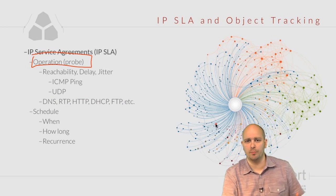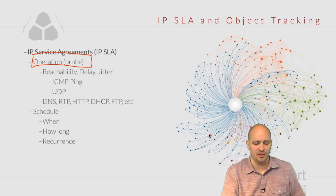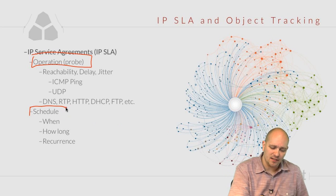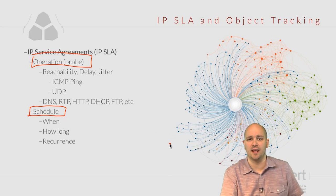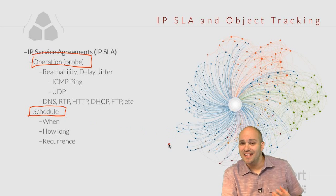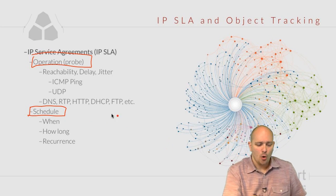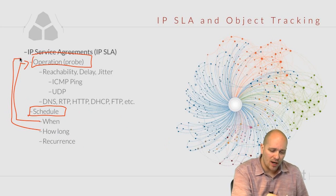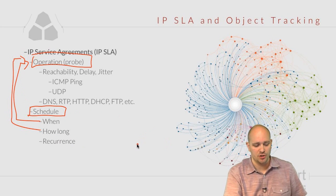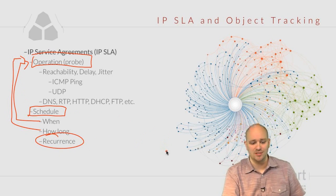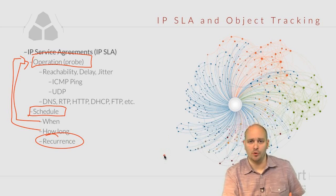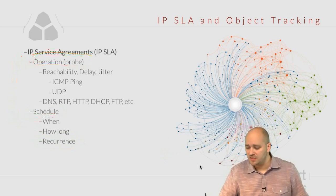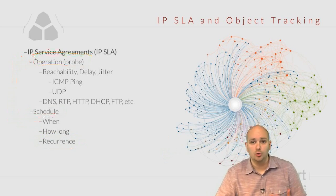We are going to define a certain operation, a certain test. The second part of the IP SLA infrastructure is the actual schedule — when are we going to run this operation, how long are we going to run it for, and if we're not running it continuously, what is going to be the recurrence — once per day, once an hour, two or three times a day, and so on.